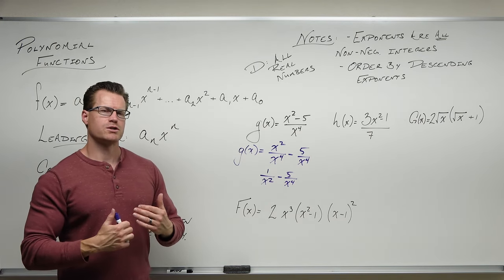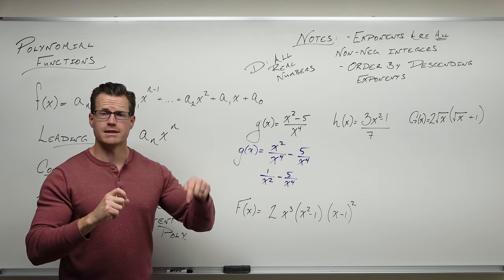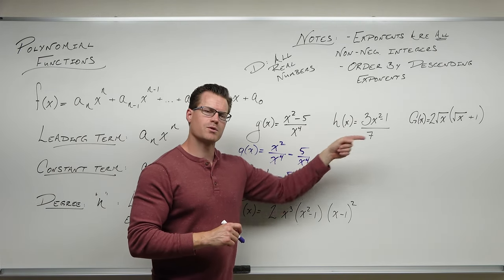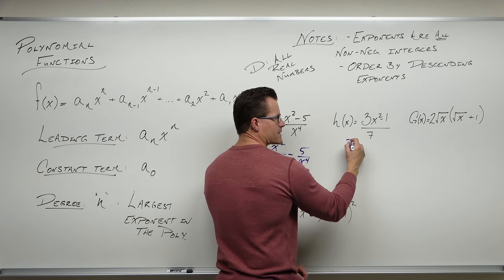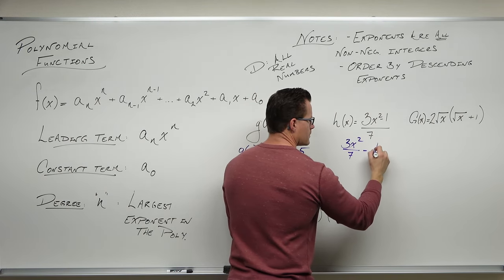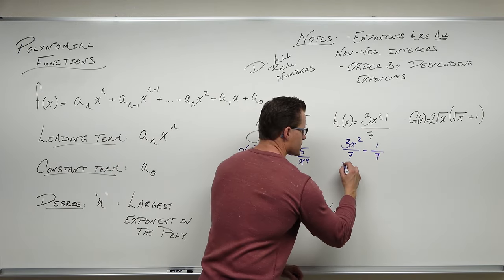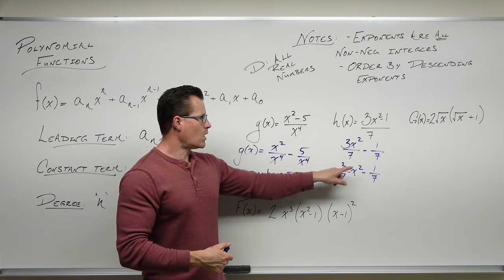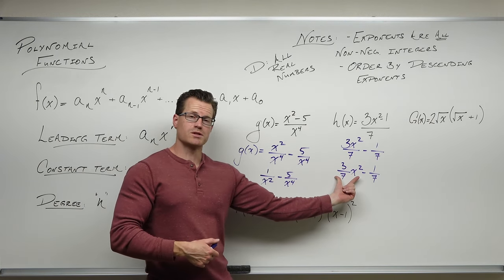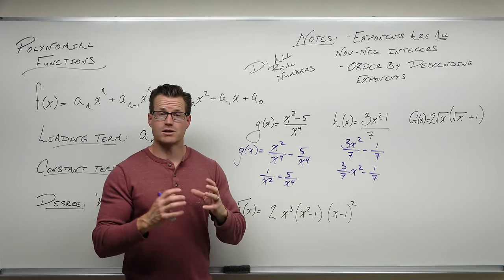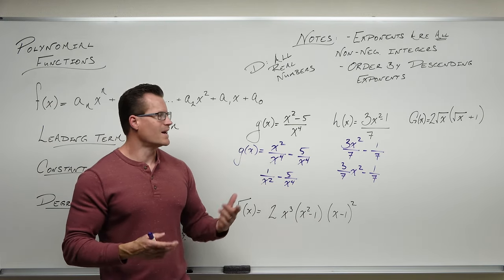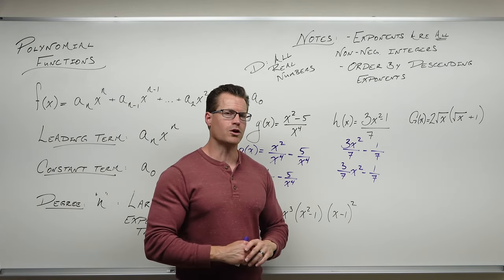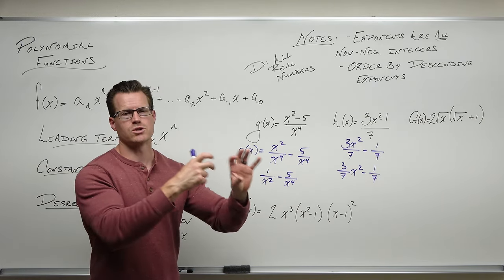If it's a fraction where you have variables on the denominator, that is when you get 'I am a rational function, not a polynomial.' But consider the next example: there are no variables on the denominator. If you simplify, you could write it as (3/7)x² − 1/7. It's in order — the exponent is positive, there's a constant. The leading term is (3/7)x², the leading coefficient is 3/7, the degree is 2, and the constant is −1/7. That's certainly a polynomial. You just need to look at your denominator: variables down there means rational; no variables means it can be a polynomial.